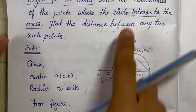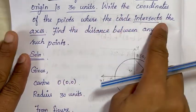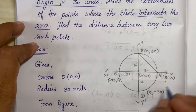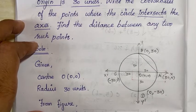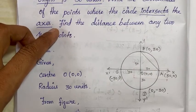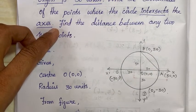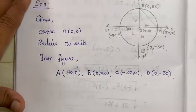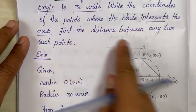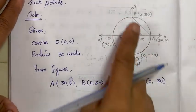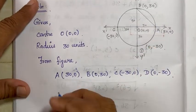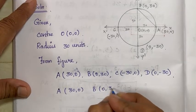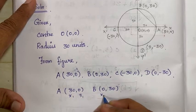So the coordinates of the four intersection points are: A = (30,0), B = (0,30), C = (−30,0), and D = (0,−30). Now find the distance between any two such points — let's take A and B. A is (30,0) and B is (0,30), which are x₁,y₁ and x₂,y₂ respectively.